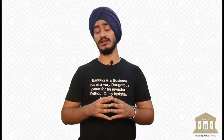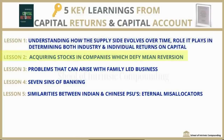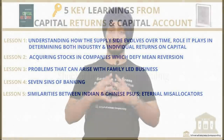This is the basic premise of the book. Following this, there are 5 key learnings from Capital Cycle and Capital Accounts, and Indian listed businesses have also seen the capital cycle. The first key lesson is to understand how the supply side evolves over time and the role it plays in determining both industry and individual returns on capital. The second key lesson is acquiring stocks in companies which defy mean reversion. Coming to the first key lesson — looking at the supplier side.